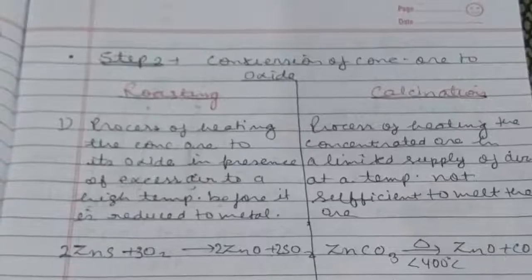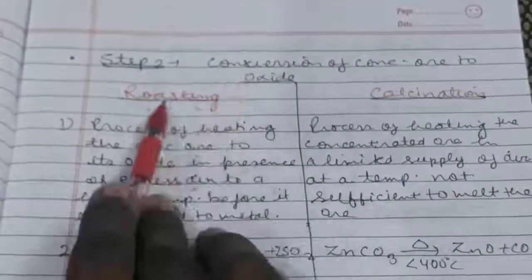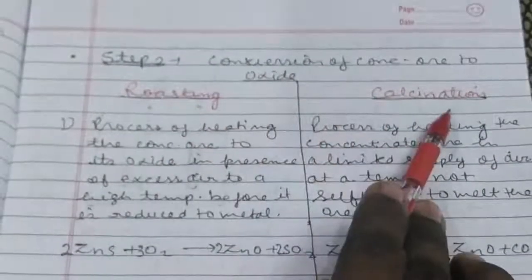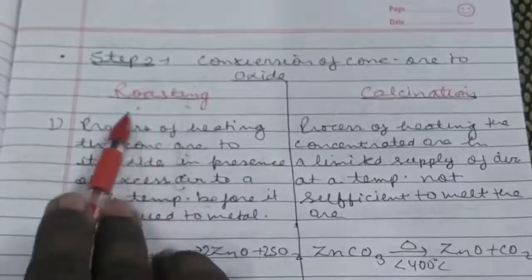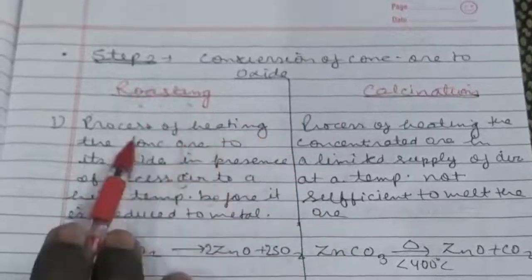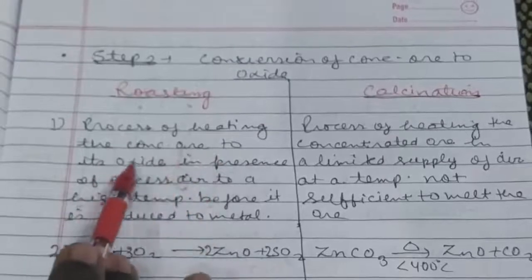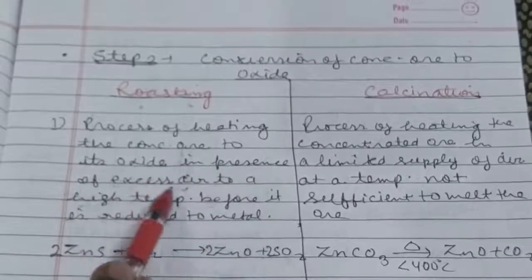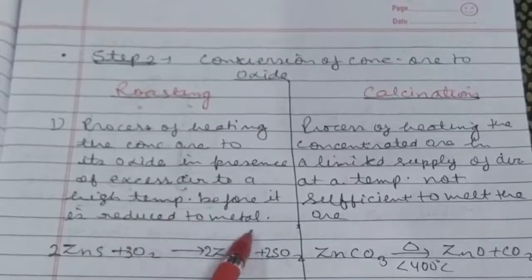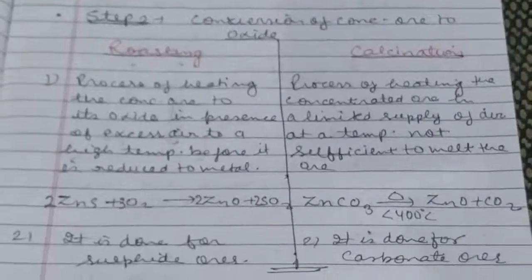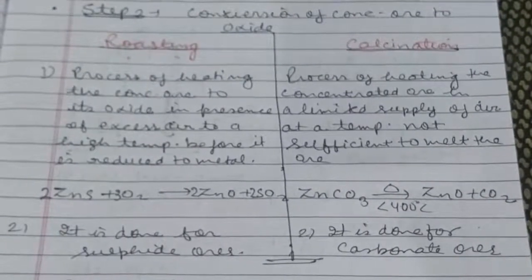Now, second step. It is conversion of concentrated ore to oxide. Two methods are there: roasting and calcination. As I have told you just a few times before. Roasting process, what is its definition? Process of heating concentrated ore to oxide in presence of excess air to high temperature before it is reduced to metal. This may come in form of a difference. In the board exam, there may be a difference between roasting and calcination. First, you have to write down the definition.